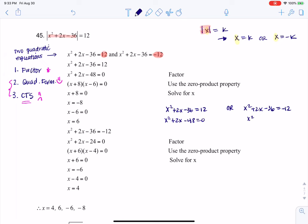Or x squared plus 2x minus 24 equals 0. And it turns out I actually can factor both of those. This becomes x plus 8 times x minus 6. This becomes x plus 6 times x minus 4.